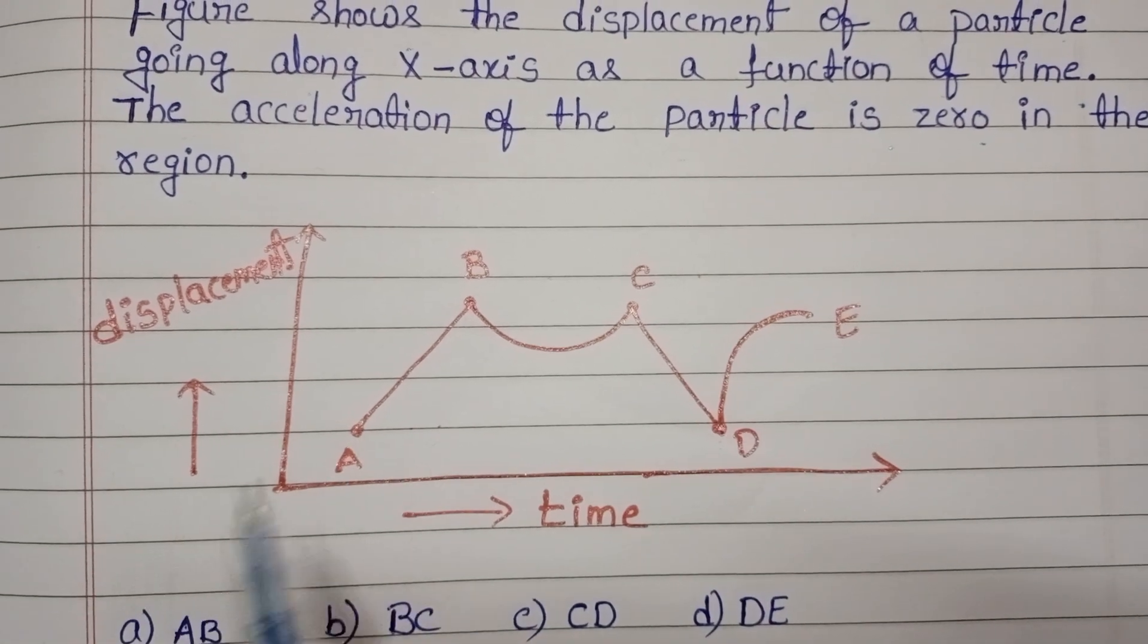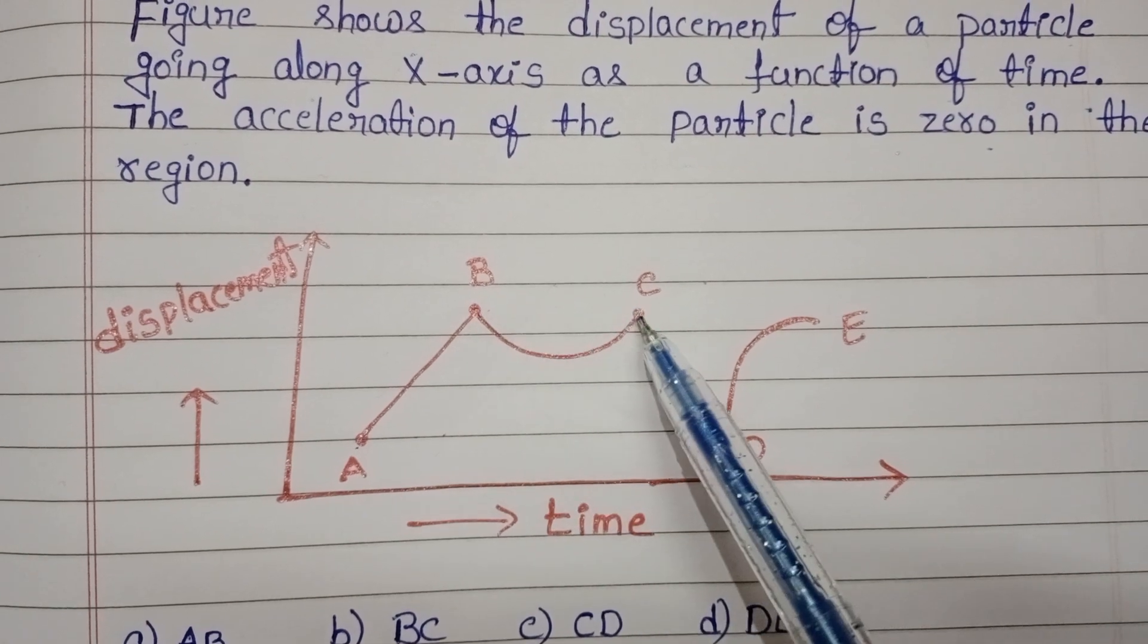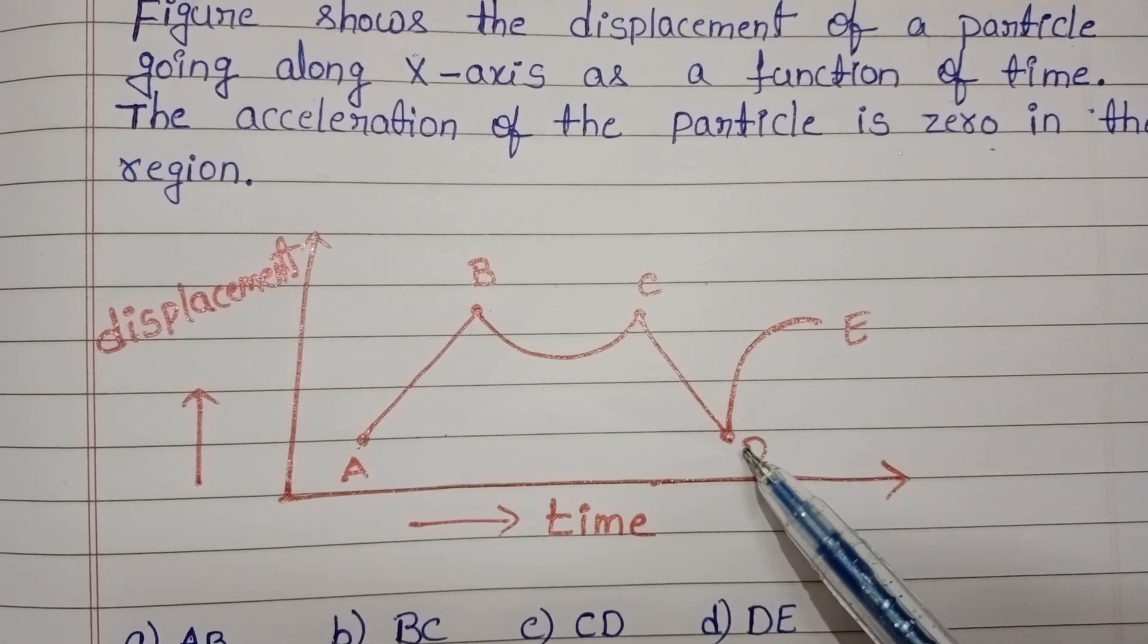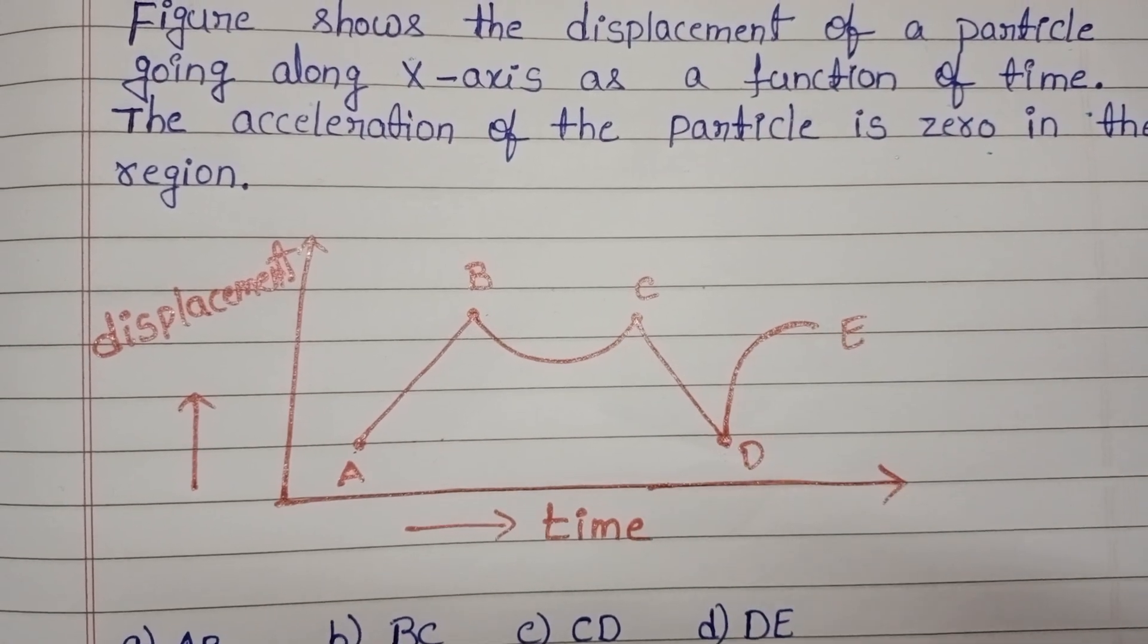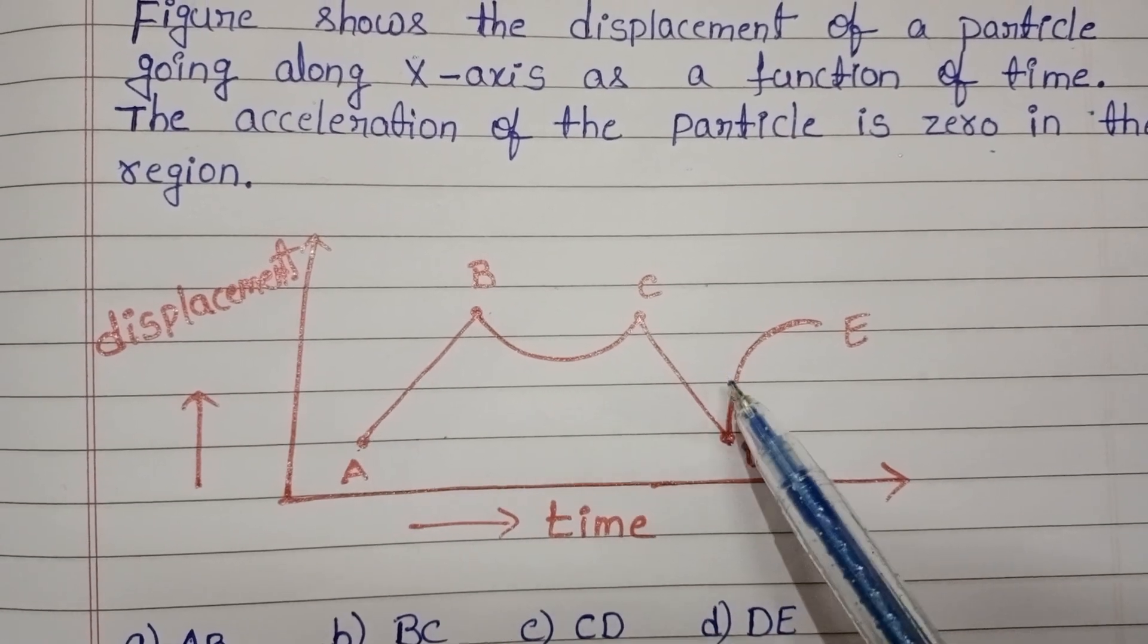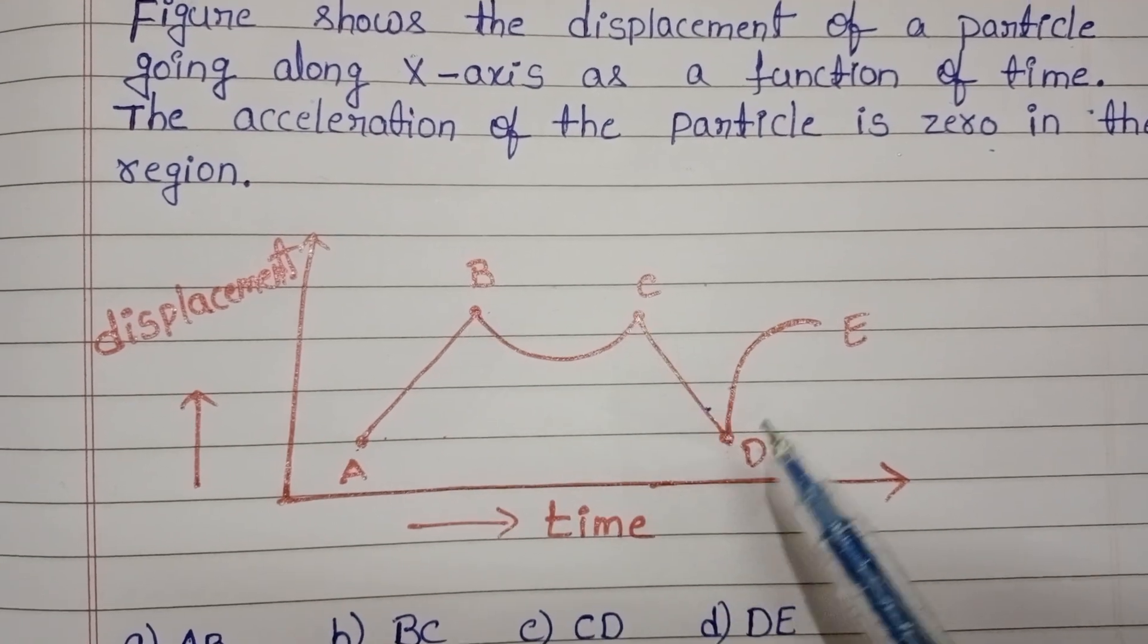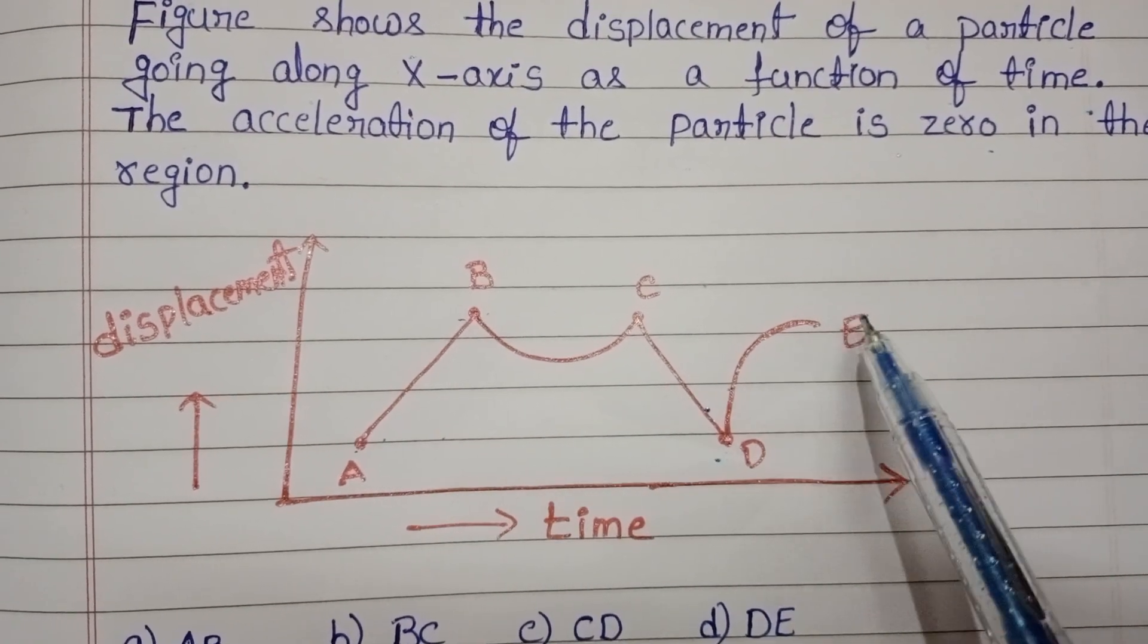But in this graph there are different regions. Here first AB region, BC region and CD region, DE region. AB and CD these two regions are straight lines. But BC and DE these two are curves.